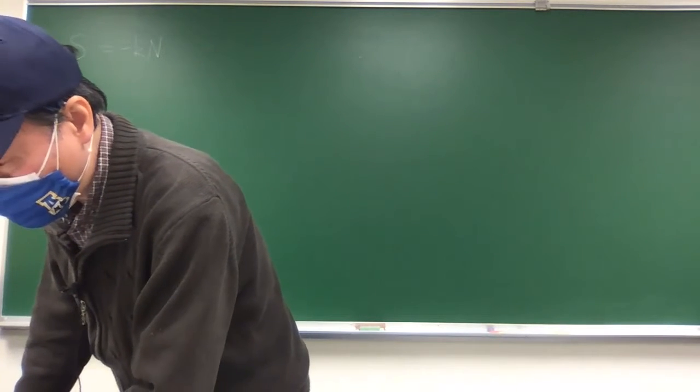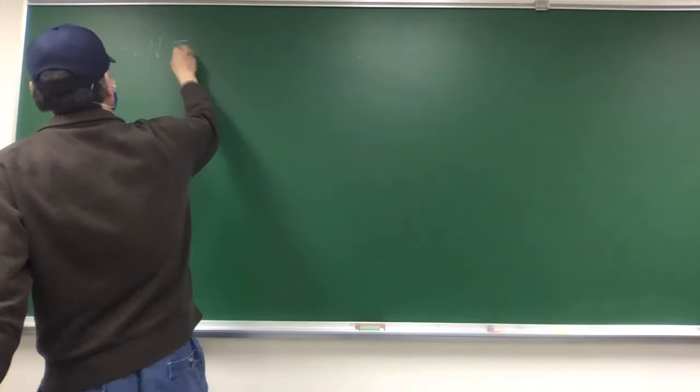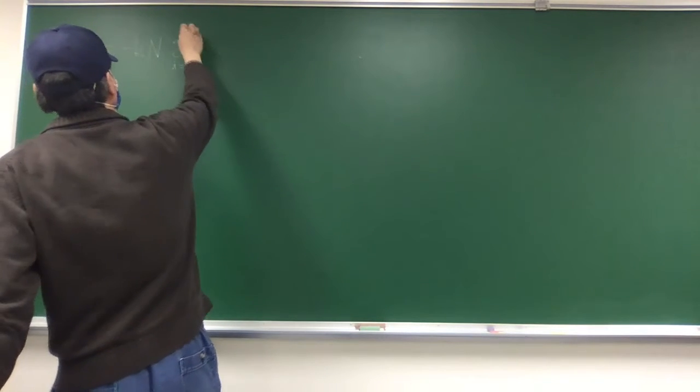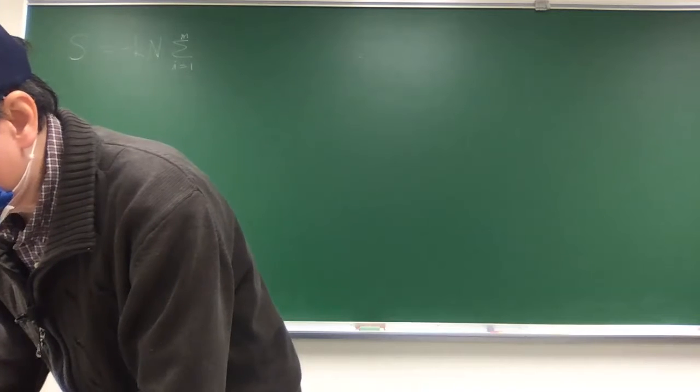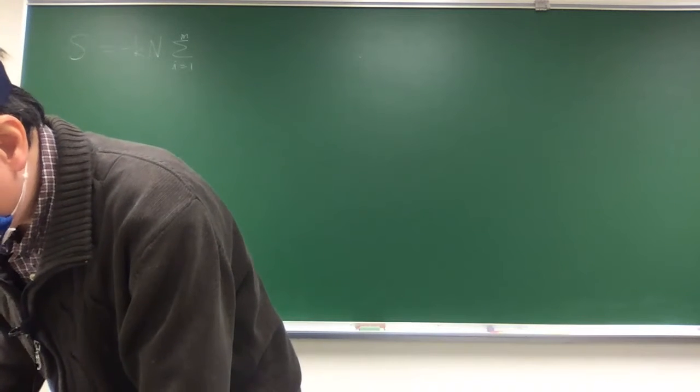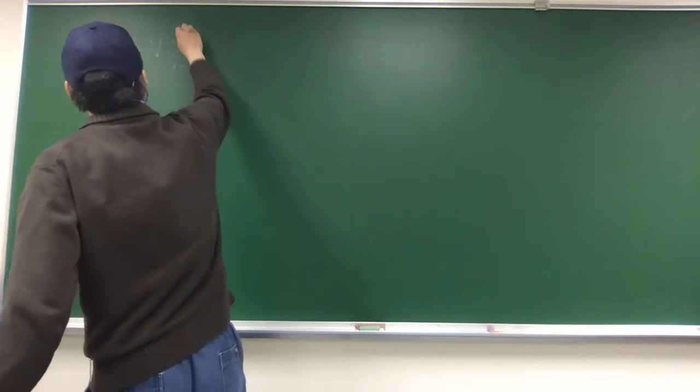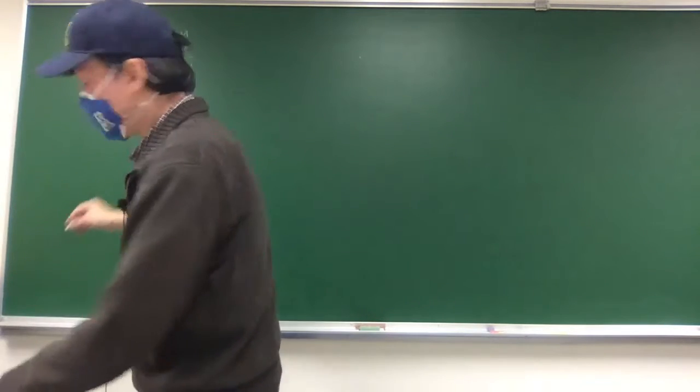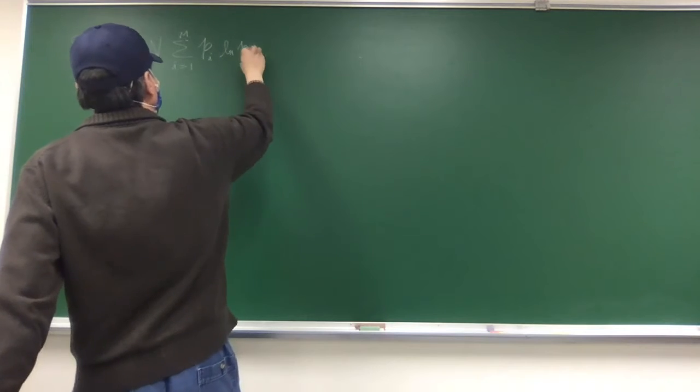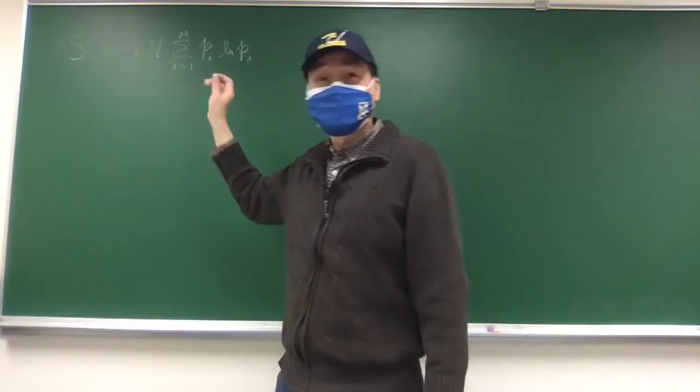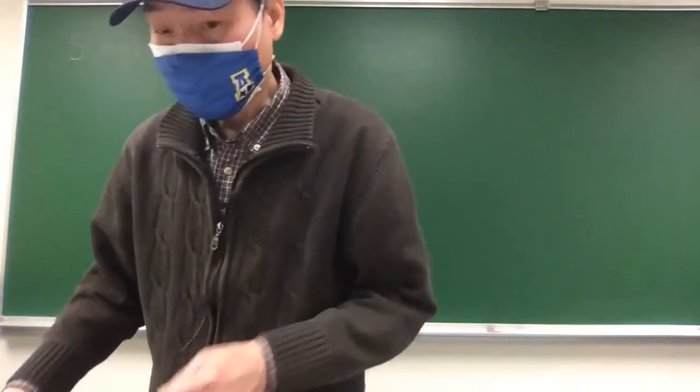And you sum over i by 1 to m. m is the number of states. This is what you got from the first part a.